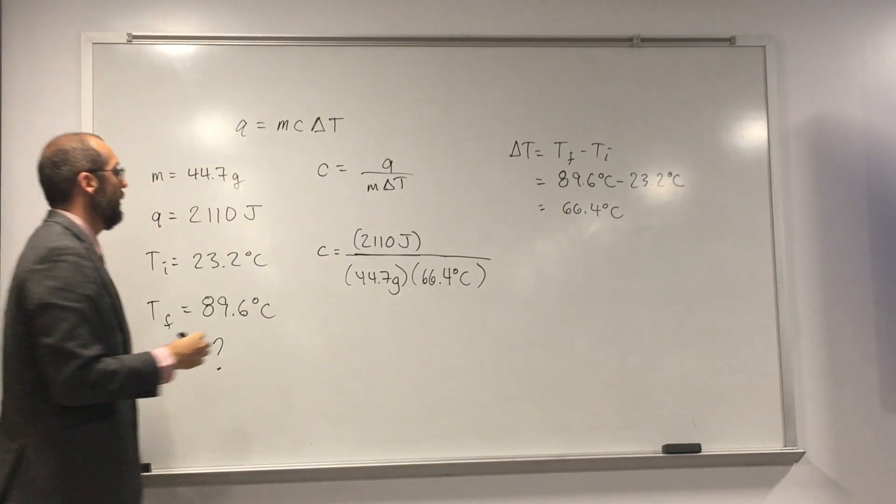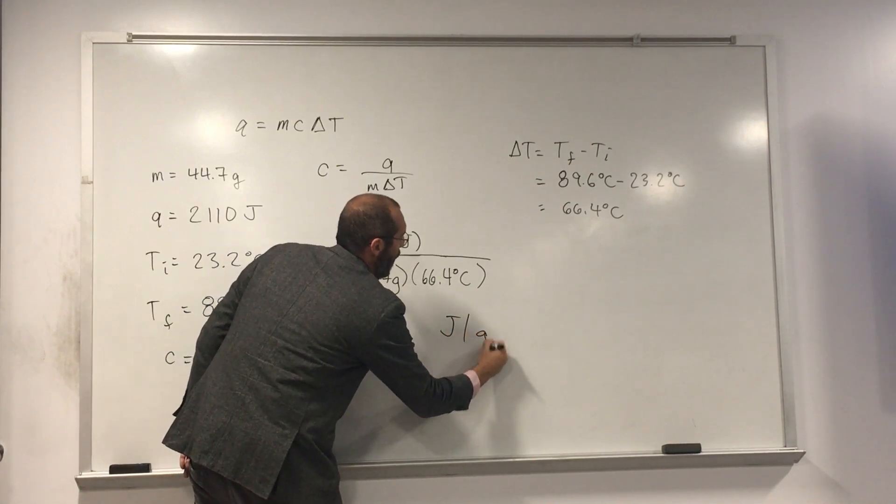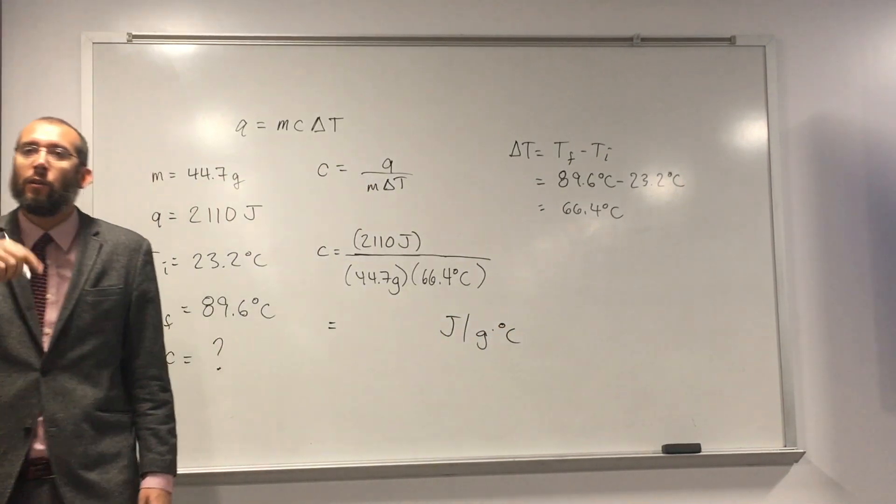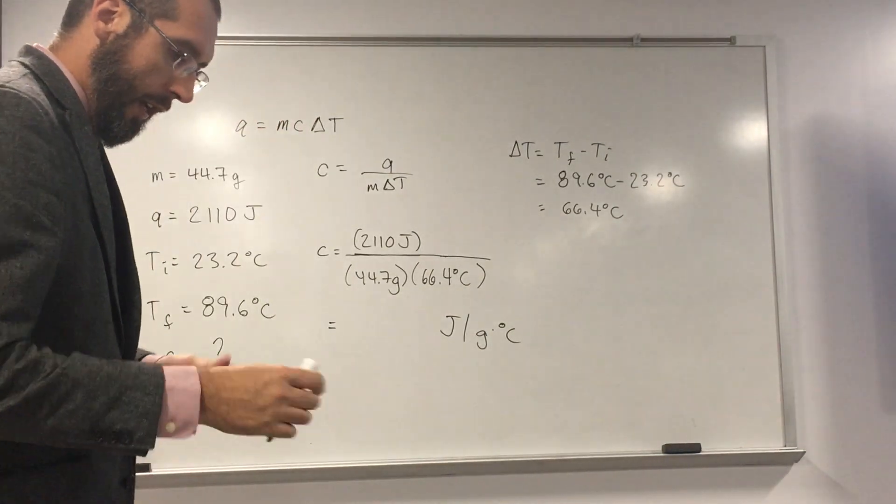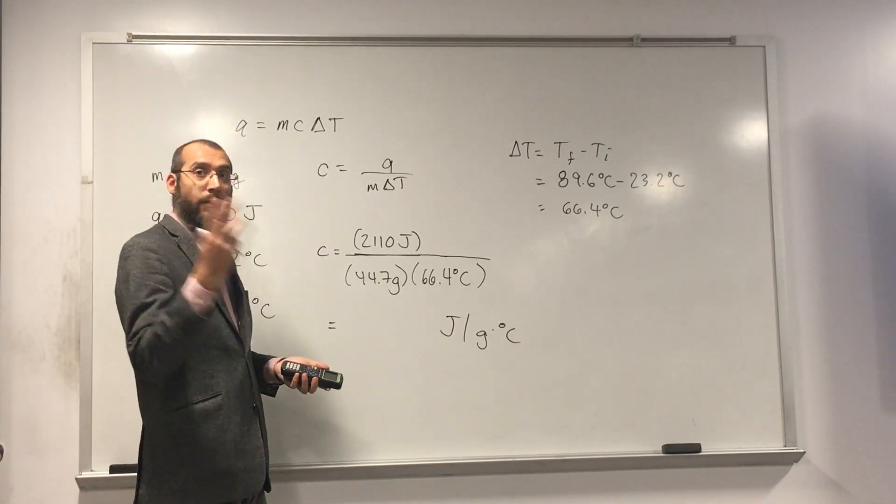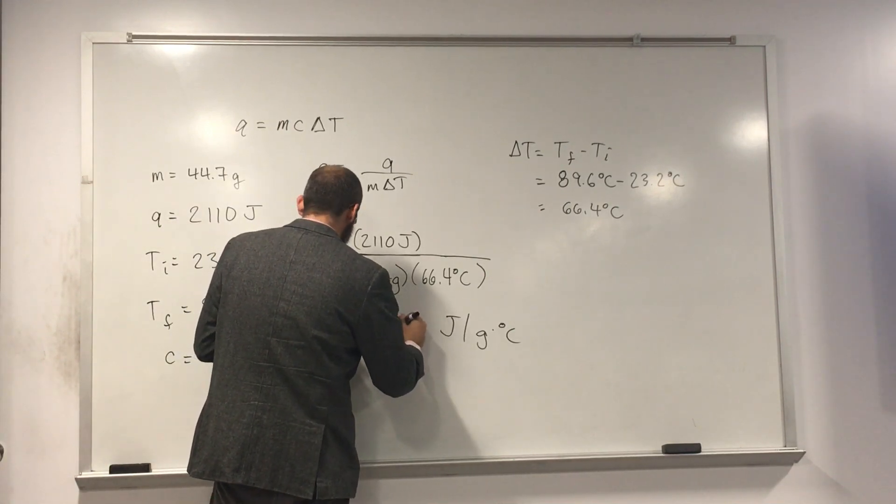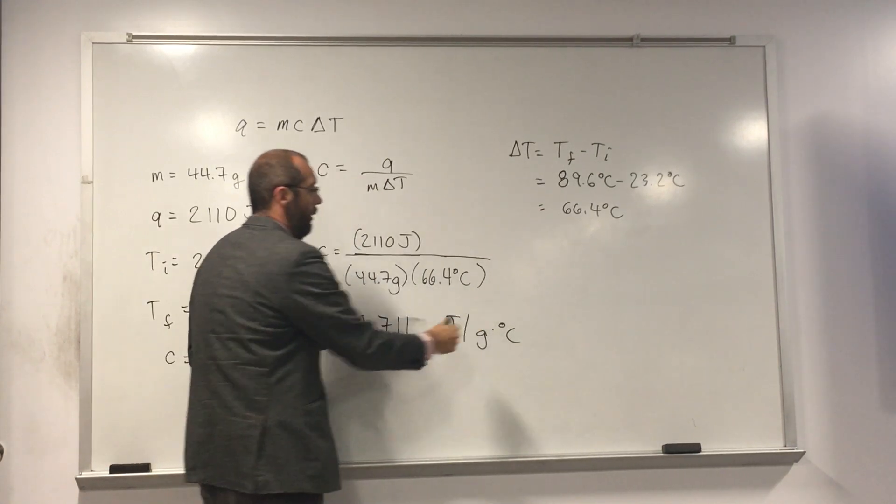And just everybody take a look up here, what are the units that we're going to get out of this? Joules per gram degree Celsius, right? And that's the units for specific heat. Is everybody okay with what we've done? Okay, cool. So, let's go ahead and solve it. 2110 divided by 44.7 and divide that by 66.4. And how many sig figs are we going to go to? Three, right? Okay, so we go 0.711 joules per gram degree Celsius.